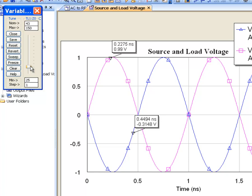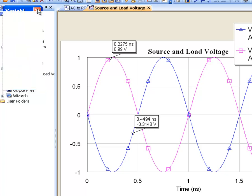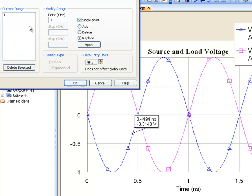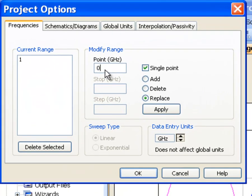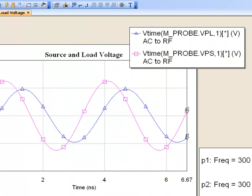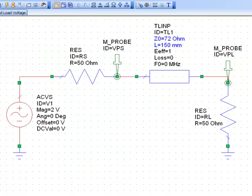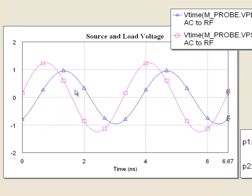Let's try and pull this trick off again at 300 megahertz. So, let's go back to our project options and replace this with 0.3. Apply and OK. So, we've changed our frequency to 300 megahertz and now let's see what happens when we simulate. We don't get the same effect.